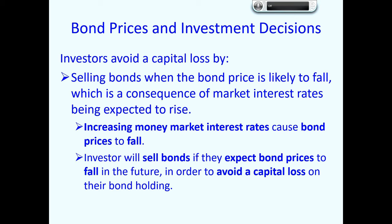Investors avoid a capital loss by selling bonds when the bond price is likely to fall, as a consequence of money market interest rates being expected to increase in the future. Increasing money market interest rates cause bond prices to fall. Remember, bond yields are fixed at the time of issue. So you can lock in a high interest rate when money market interest rates are expected to fall — causing bond prices to rise — but you don't want to lock in at a low bond yield that will become unattractive when money market interest rates increase in the future.